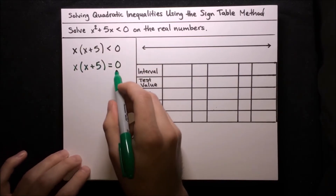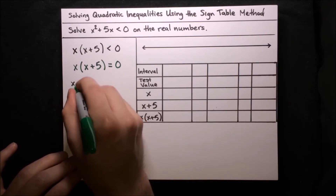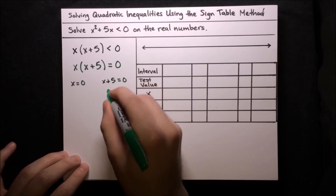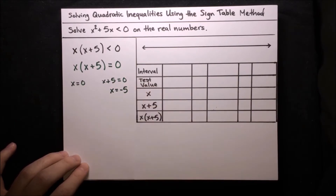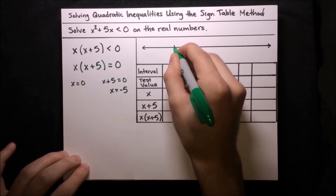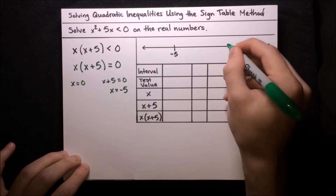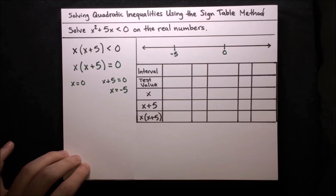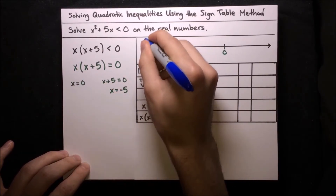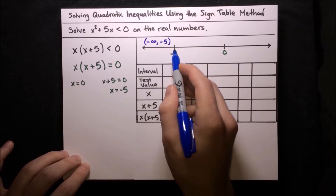So first off, where is that function equal to 0? The first solution comes from the first factor, simply x equals 0. And then the second solution would come from the second factor: x plus 5 equals 0, which means x equals negative 5. So these two roots are the values for which this function takes on the value of 0. That splits up our number line into three intervals. The split points are at negative 5 and at 0, and the three intervals that result are first from negative infinity to negative 5 — not including it because we're splitting at that point.